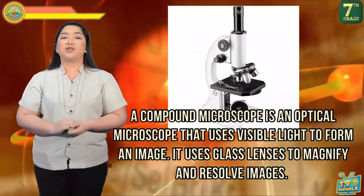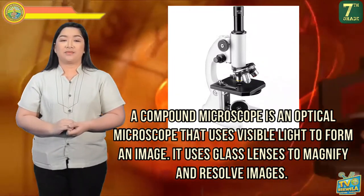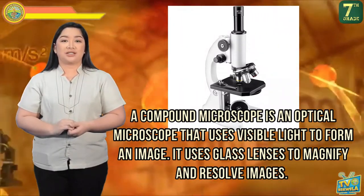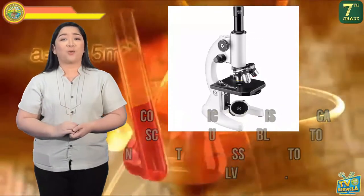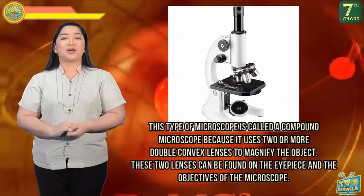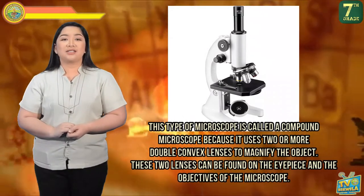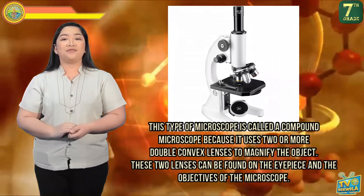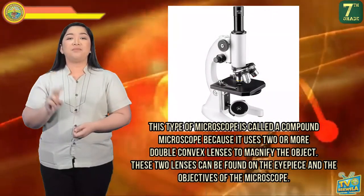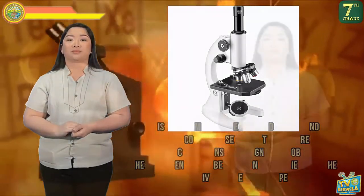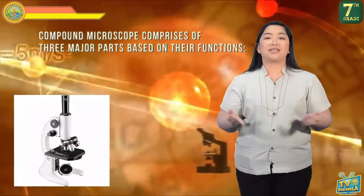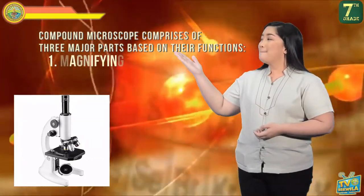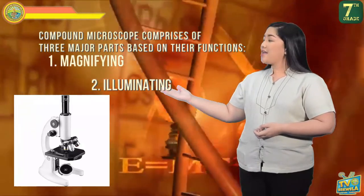There are different types of microscope, but in this video we are going to focus on a compound microscope. A compound microscope is an optical microscope that uses visible light to form an image, using glass lenses to magnify and resolve images. It is called a compound microscope because it uses two or more double convex lenses to magnify the object, found on the eyepiece and the objectives. A compound microscope comprises three major parts: magnifying, illuminating, and mechanical parts.